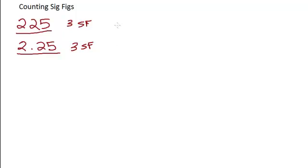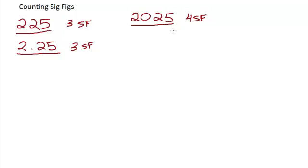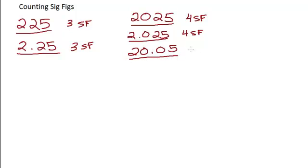If you have zeros, it gets a little trickier. The first type of zero we'll take care of is zeros between other non-zero digits. For example, if you have the number 2025, the 2, 2, and 5 are absolutely significant based on the first rule. The zero is also counted as significant because it is between non-zero digits — there are four sig figs in this number. Even if you have a decimal, this rule still stands. If I have 2.025, there are four sig figs. If I have 20.05, both zeros are counted as significant figures, giving four significant figures.